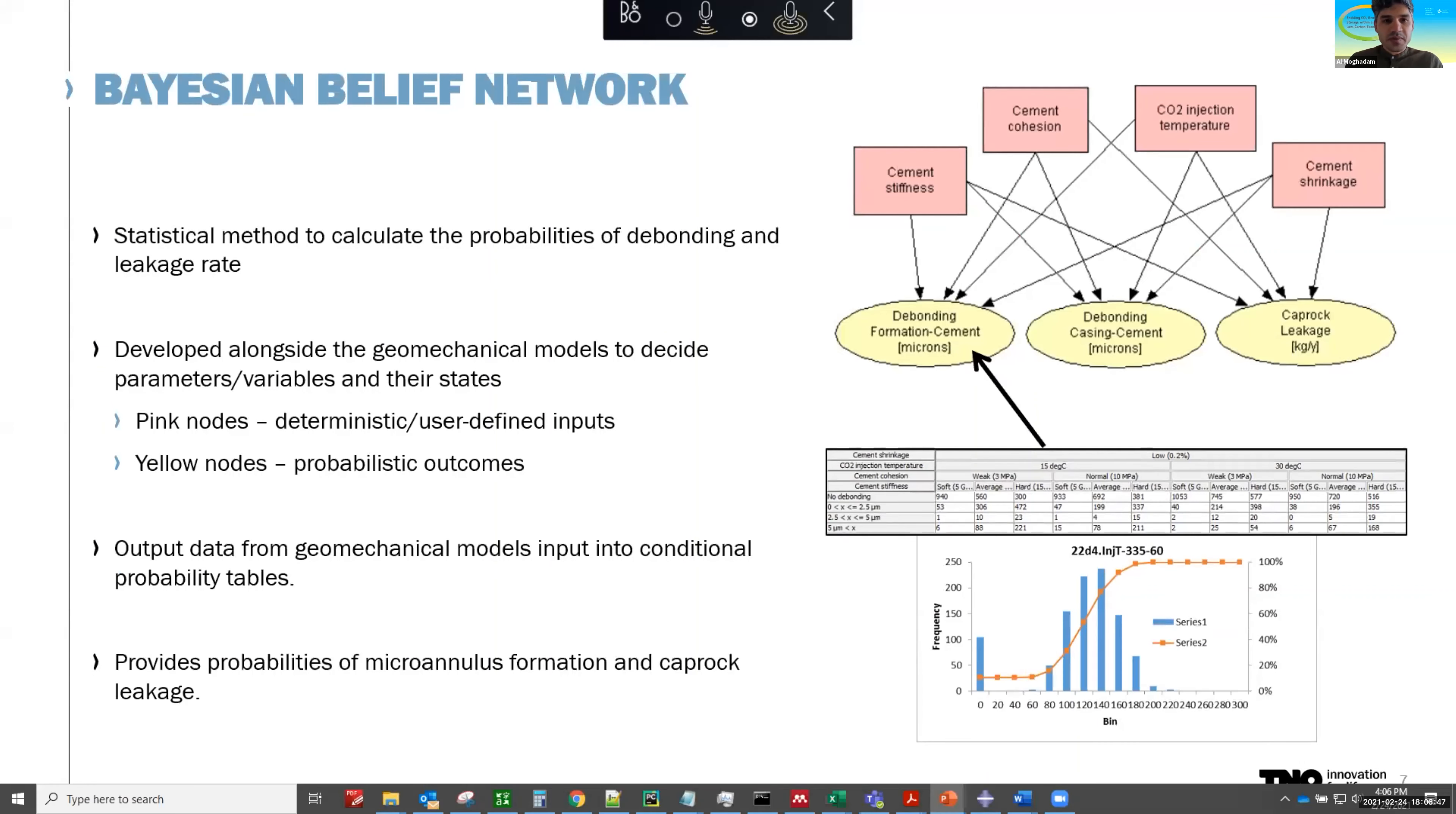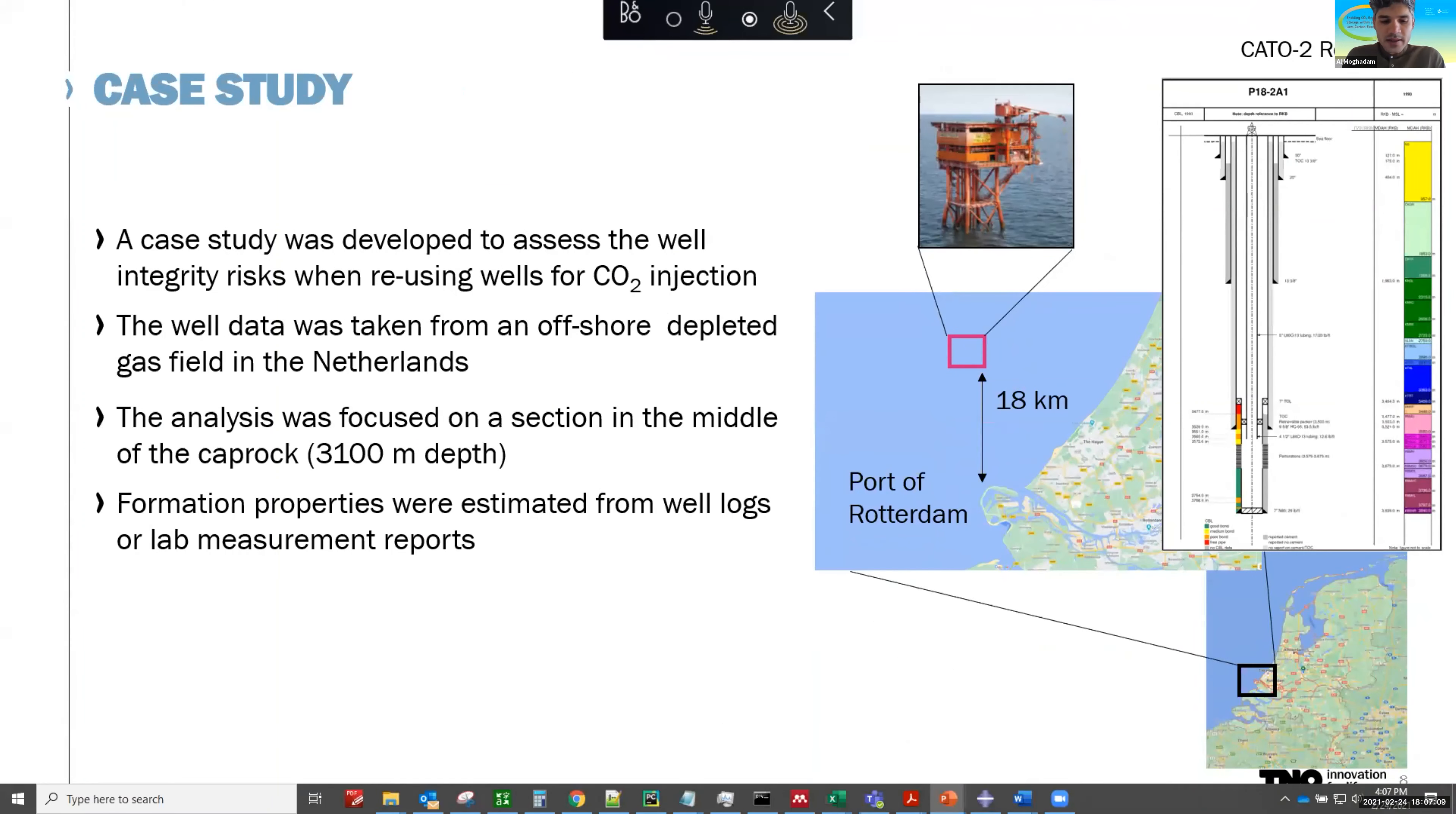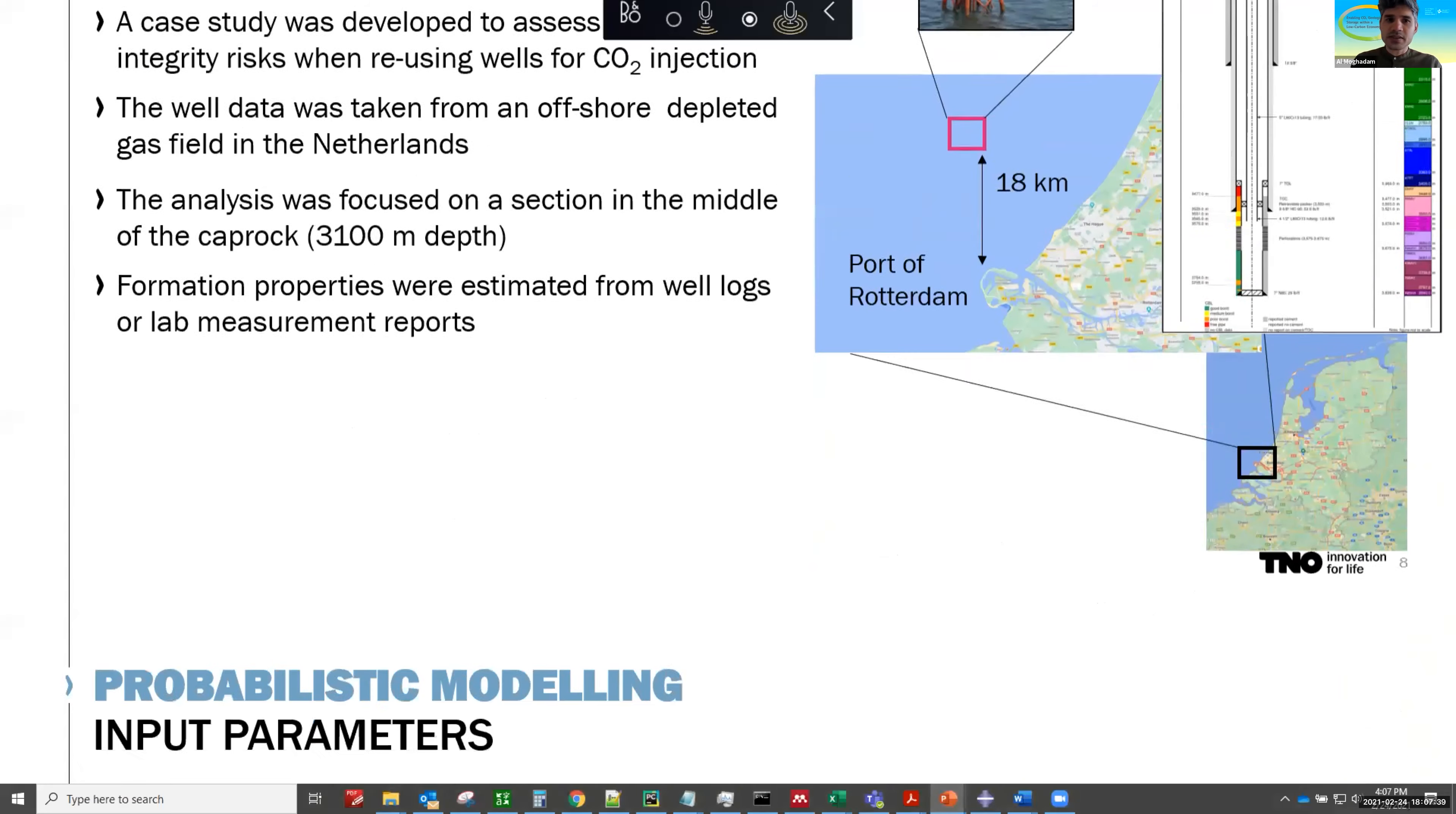Now the results of this model, once we do it probabilistically, can be fed into this Bayesian belief network so that based on certain operational parameters, you can see what is the probability of failure, what is the sort of apertures you can expect in a graphical way. Now we've applied this methodology to a hypothetical scenario in a depleted field offshore of Netherlands. Philip showed you a bigger picture, so we focused on one of the fields near Rotterdam. And so we take the formation properties from logs and from different reports, we take the well construction from what is already available, and the depth of analysis is in the middle of the caprock around 3100 meters depth.